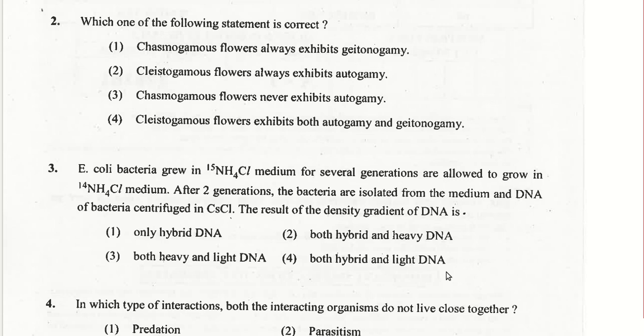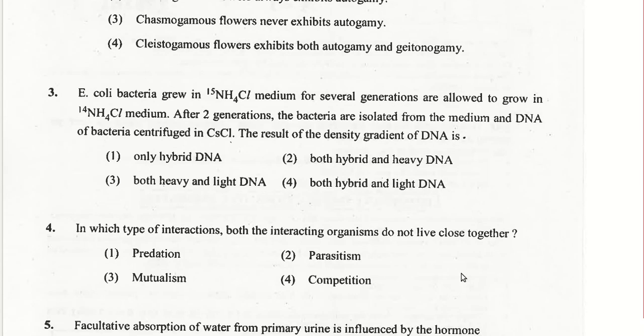In which type of interaction do both interacting organisms not live close together? Competition is an interaction where both organisms do not live close together and neither is benefited. Species A is negative and species B is also negative, so competition is the answer.